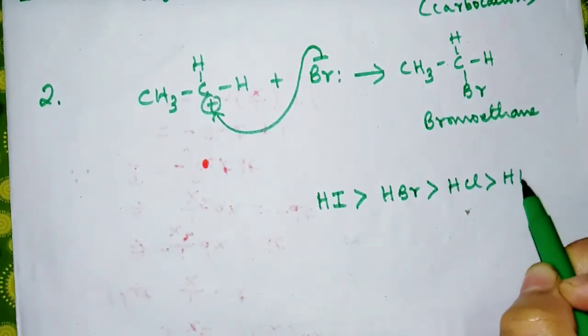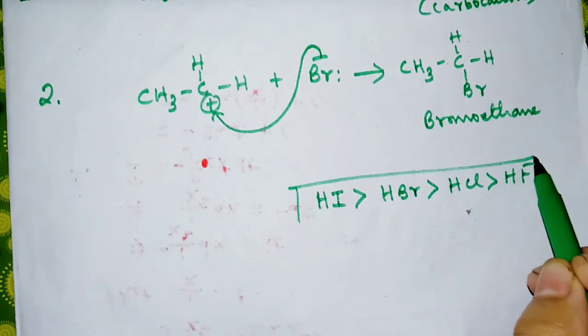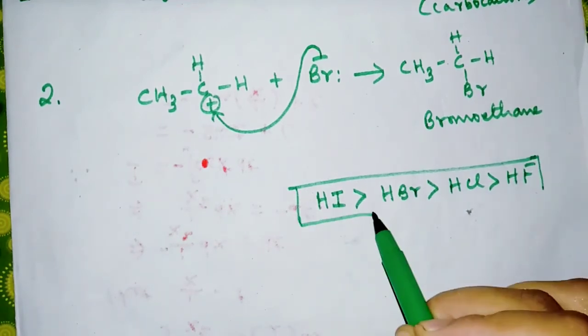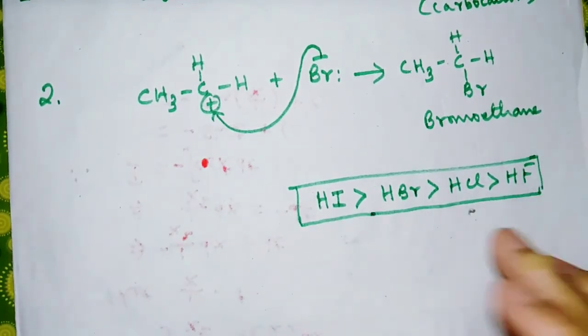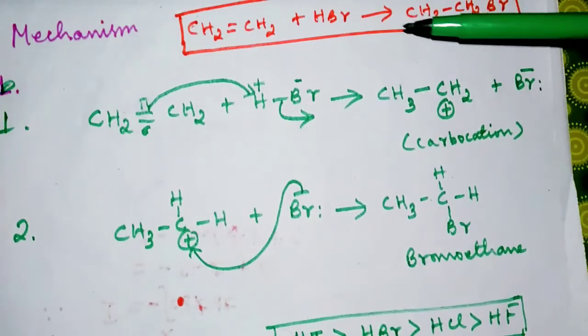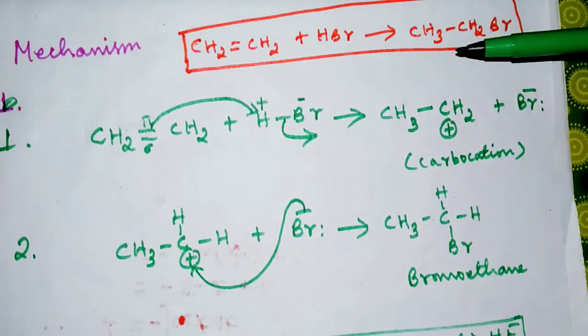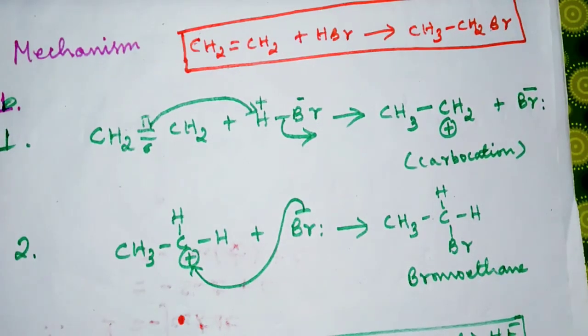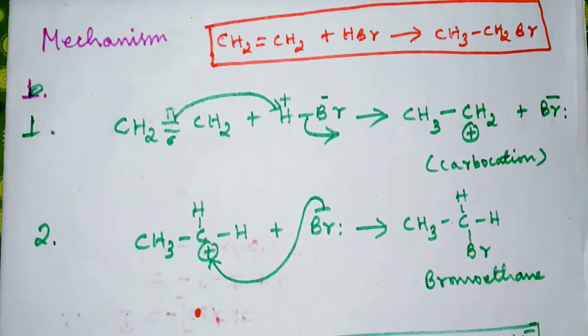Always remember this when alkenes react with hydrogen halides. That is all about the reaction of hydrogen halides with alkenes and this is the mechanism for this particular reaction. In another video I will explain what happens in the case of unsymmetrical alkenes.